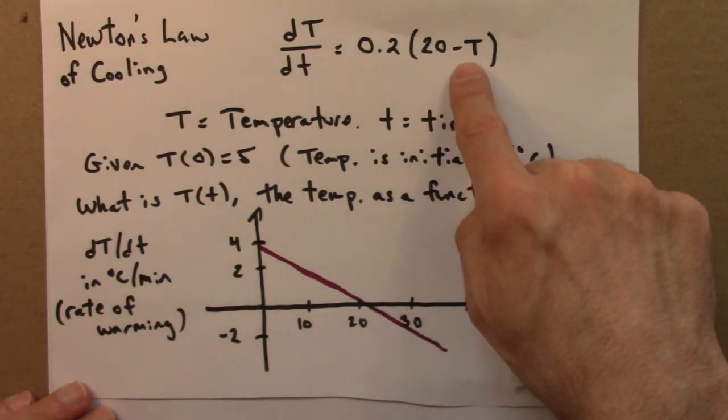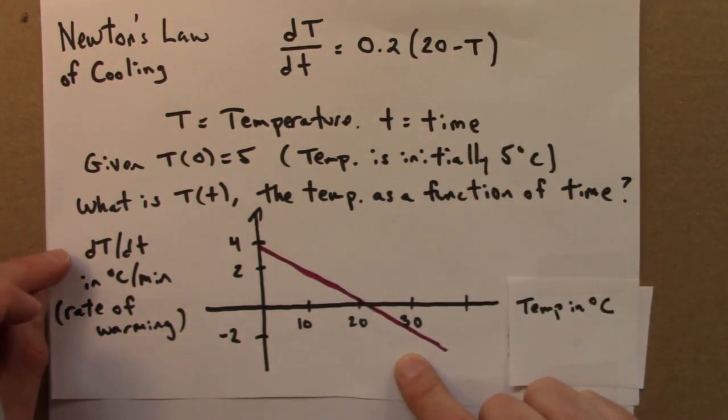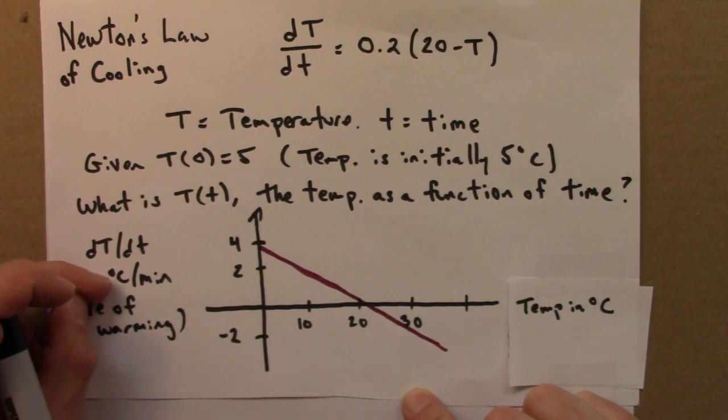And then we interpret this as the derivative, the rate of change of the temperature. So, this would have units of degrees Celsius per minute, how fast the temperature is warming up or cooling off.